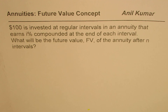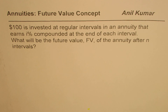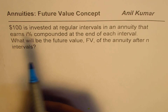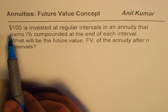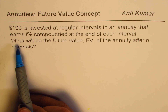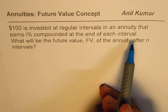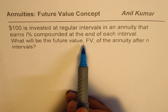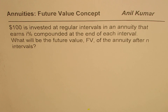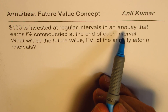I'm Anil Kumar and in this video we'll try to understand the concepts of annuities — describe what annuities are and how to derive a formula to calculate the future value. For that purpose I've taken a very simple and general example: $100 is invested at regular intervals in an annuity that earns I percent compounded at the end of each interval. What will be the future value FV of the annuity after N intervals? That's the question we are going to explore.